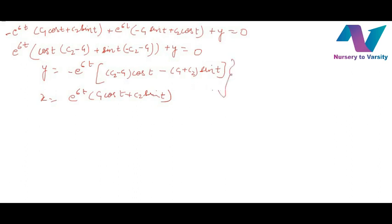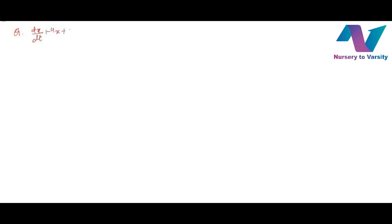This is the answer for this differential equation. Now I will take another example to elaborate in an easier way, where the right-hand side will also have a function of t (not just 0), so we will find both CF and PI. The new question is: dx/dt plus 4x plus 3y equals t.